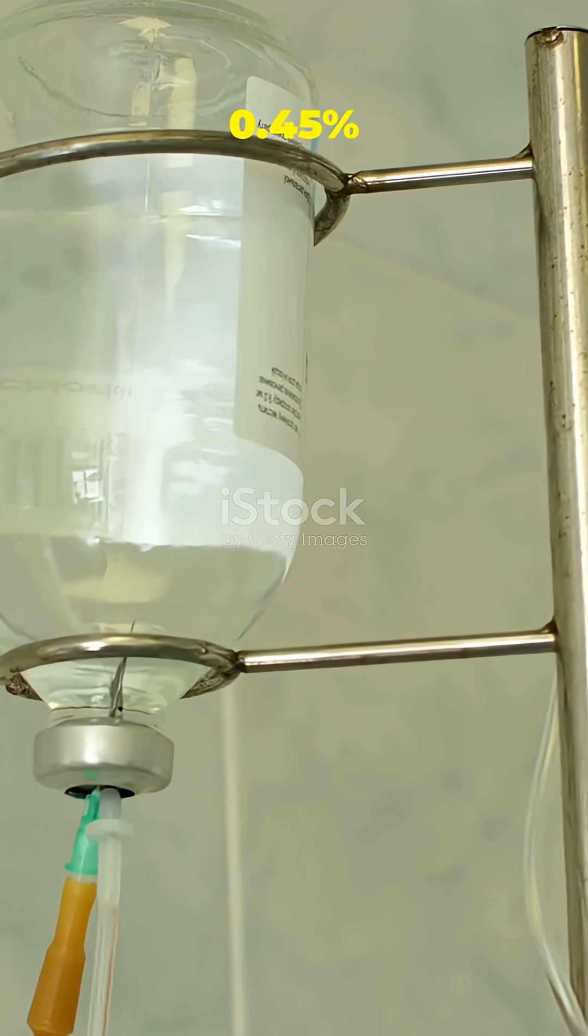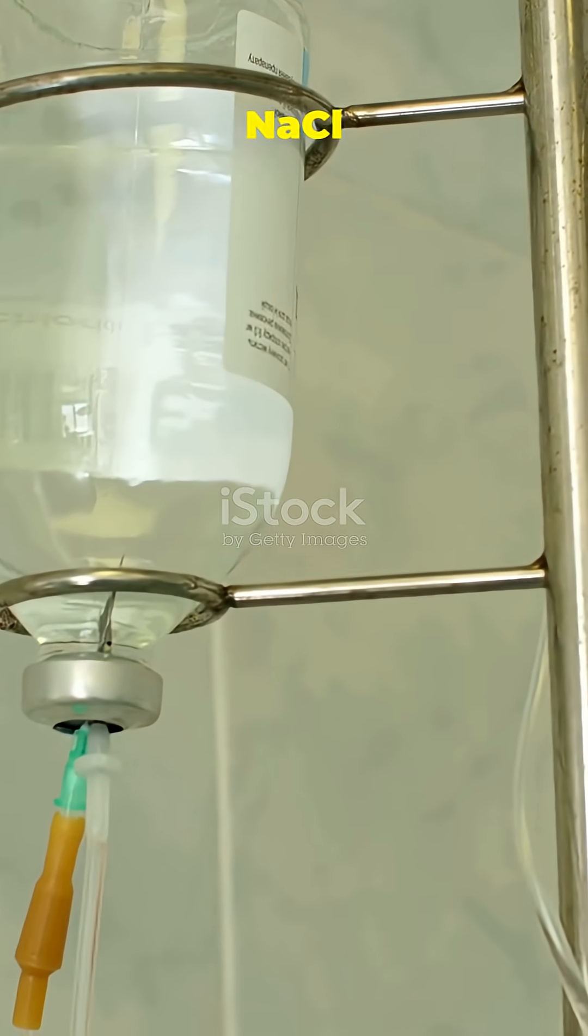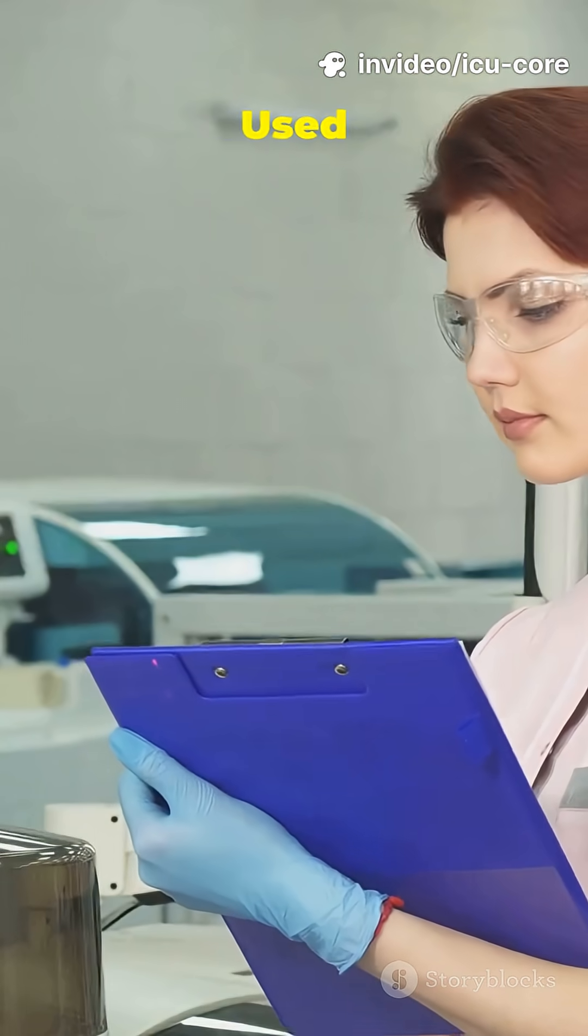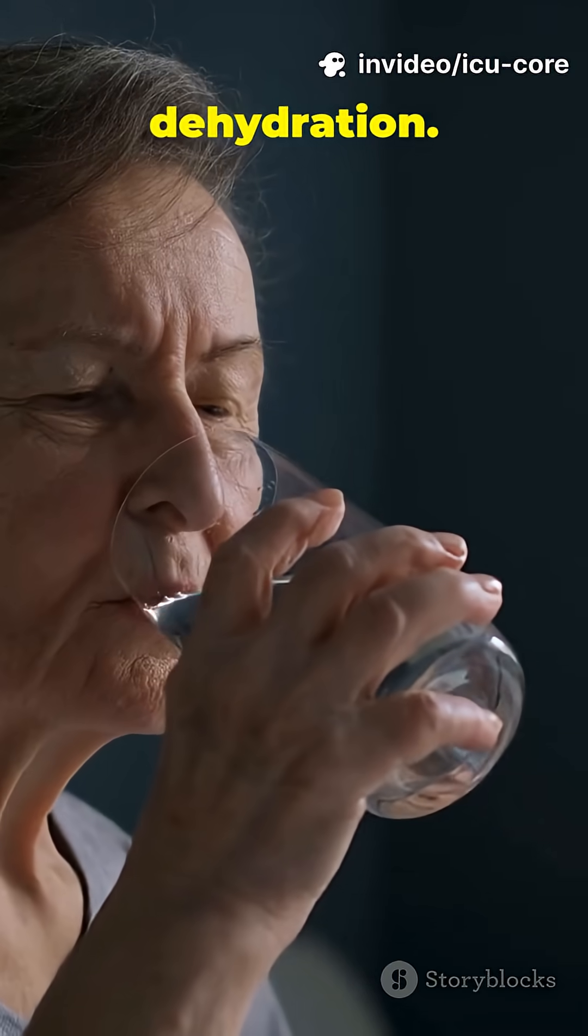Half normal saline, 0.45% NaCl, hydrates cells from inside, used in hyponatremia or cellular dehydration.